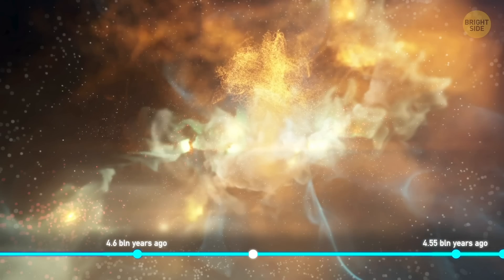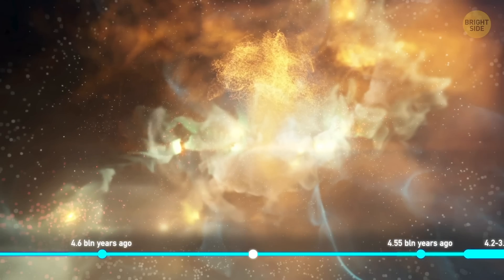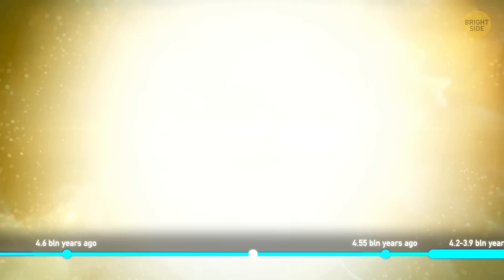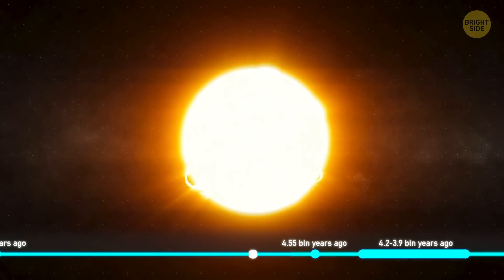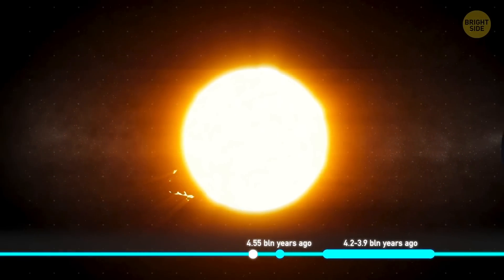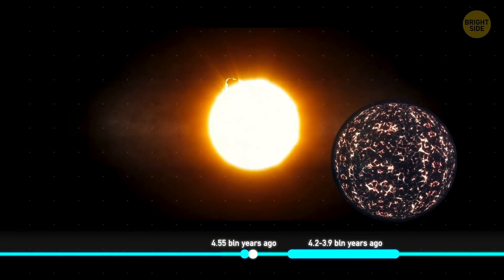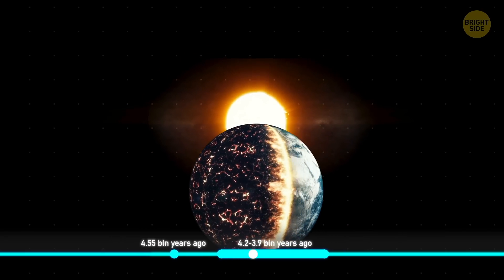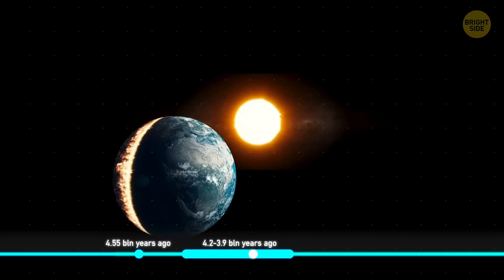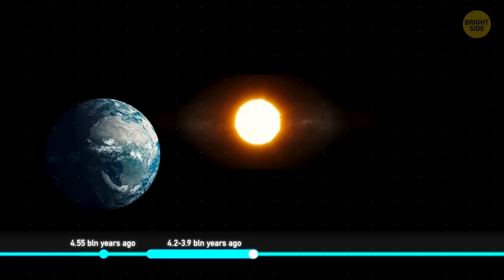The cloud of dust and gas I mentioned earlier had finally collapsed enough to form a star. And it took just another couple of million years for the Earth to be born. It was extremely hot back then, and there was no chance for any life to survive. But after a few hundred million years, the miracle happened, and the first living creatures appeared on the planet's surface.